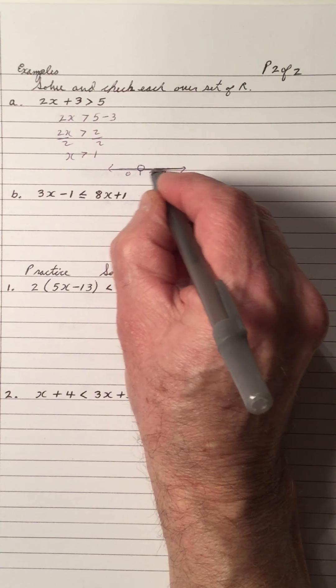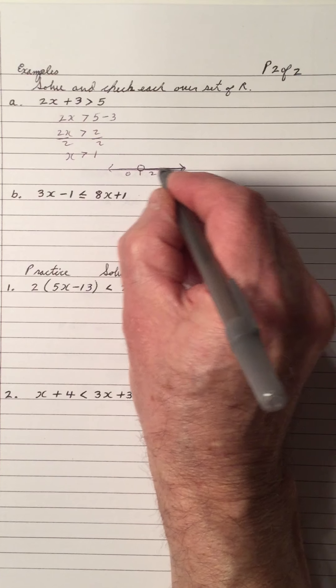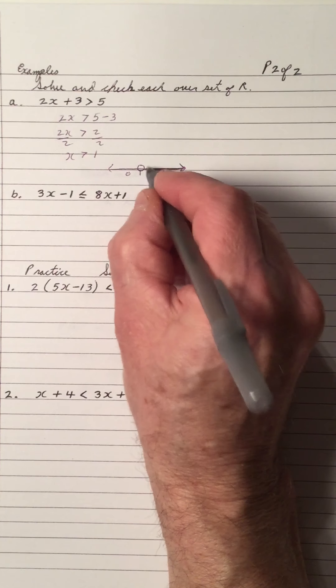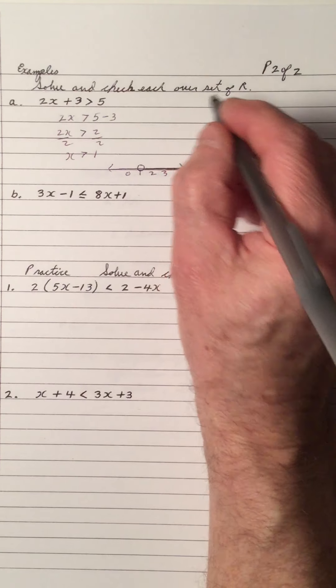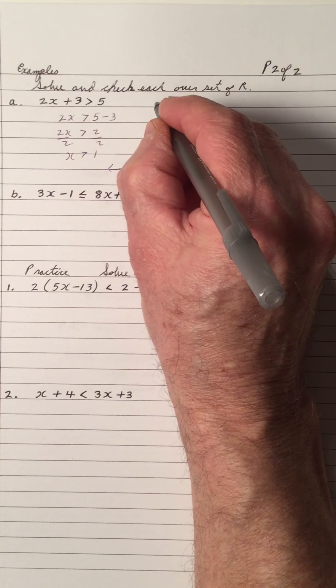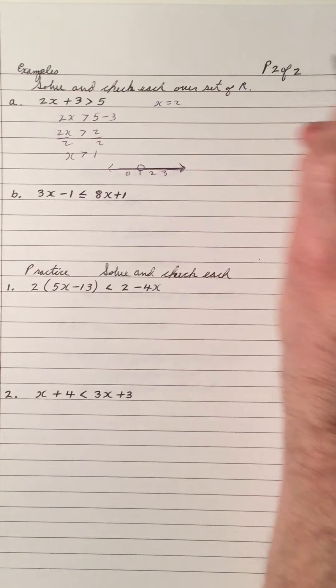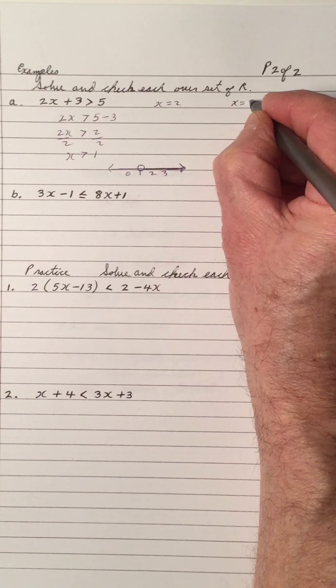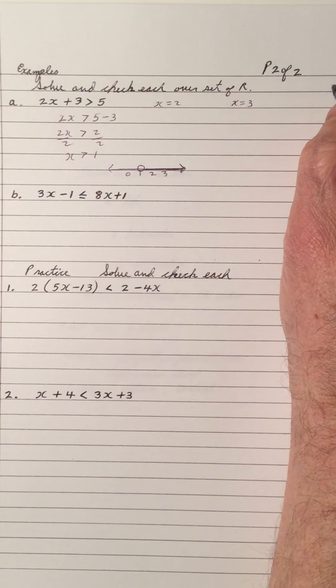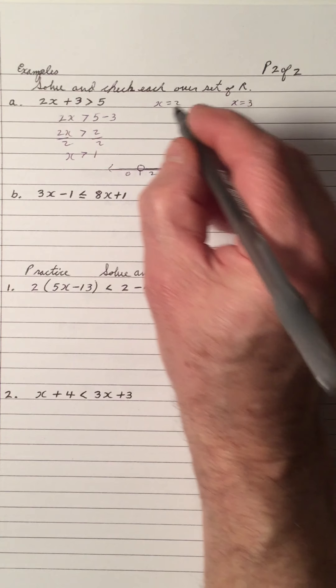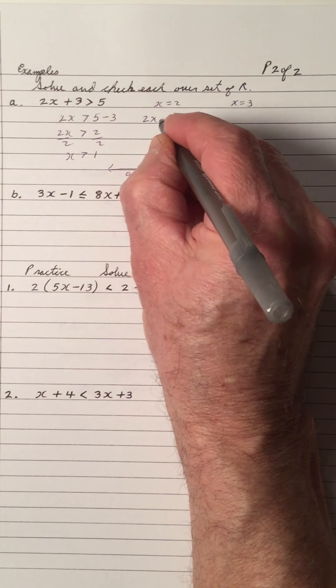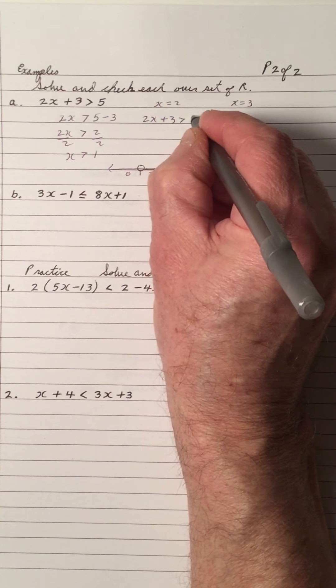We cannot name all the real numbers that are greater than 1, so we do a shading. That means we could take x equals 2 as a solution. We could take x equals 3 as a solution. Any number greater than 1 will fit this inequality.